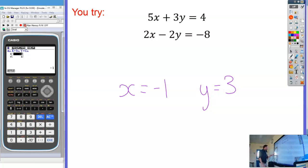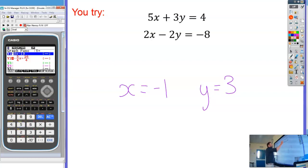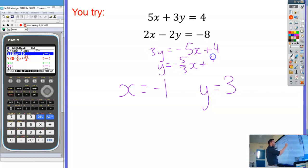And then if you want to do that graphically, we'll go to menu, number 5 is graph. We're going to need to make Y the subject, so in this top equation, take away the 5X and I get 3Y equals minus 5X plus 4. Divide by 3 and I get Y equals minus 5 over 3X plus 4 over 3.